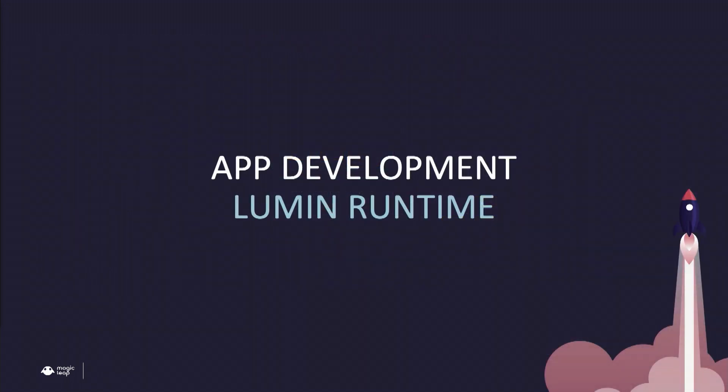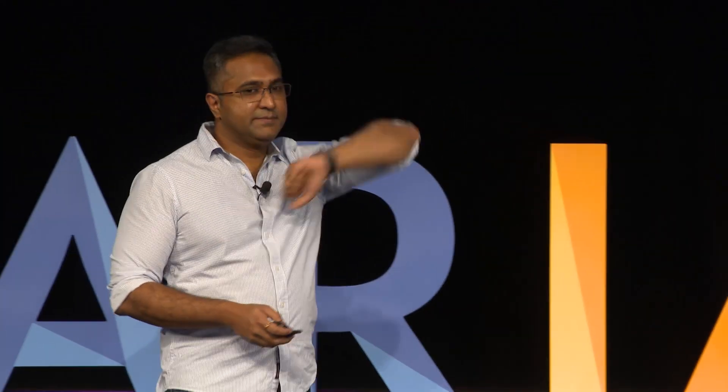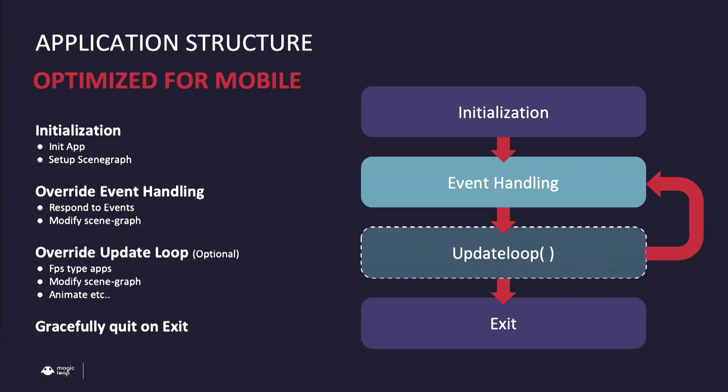Let's have a quick look at how to develop a Lumen Runtime app. It's no different from any other app you've been developing. You have an initialization phase, then an event-handling phase for input events and such, then your app reacts to them. If you're from the gaming world, you have an update loop so you can do things every frame — like moving characters. And once you're done with the app, you quit.